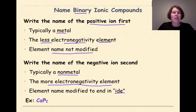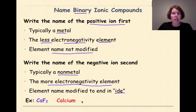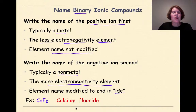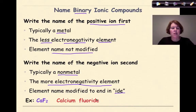Here's an example: CaF₂. I know this is composed of calcium and fluorine. The first part of the name is calcium — not modified. The second part is fluorine, but we change the -ine ending to -ide, so fluorine becomes fluoride. As a result, we have calcium fluoride.